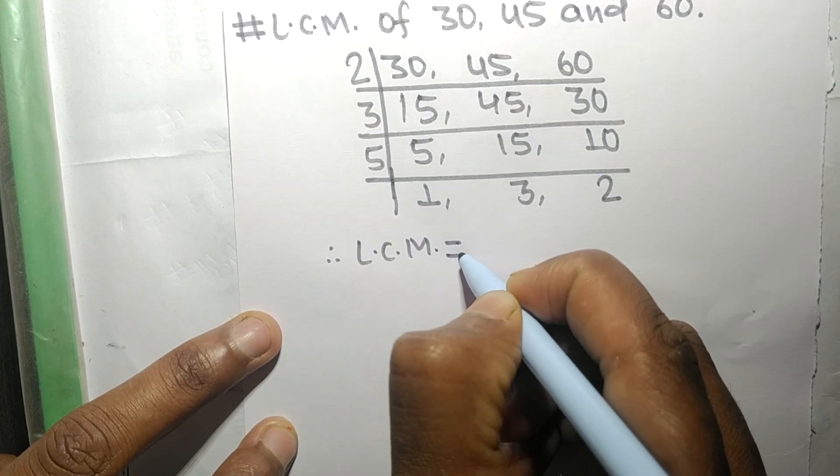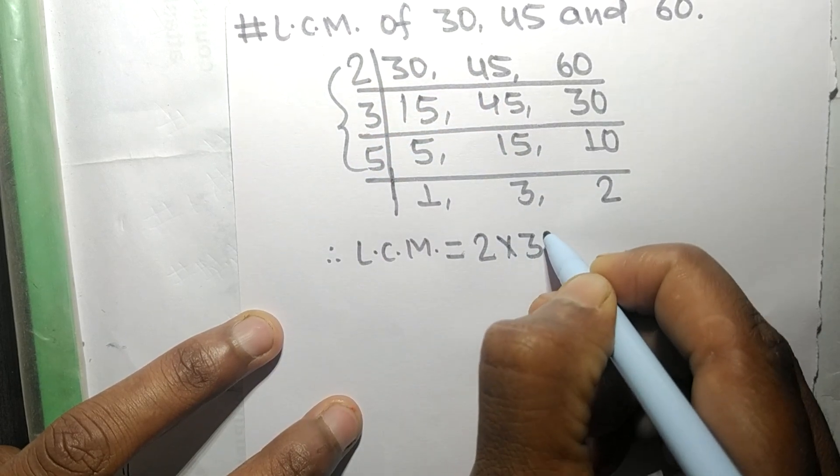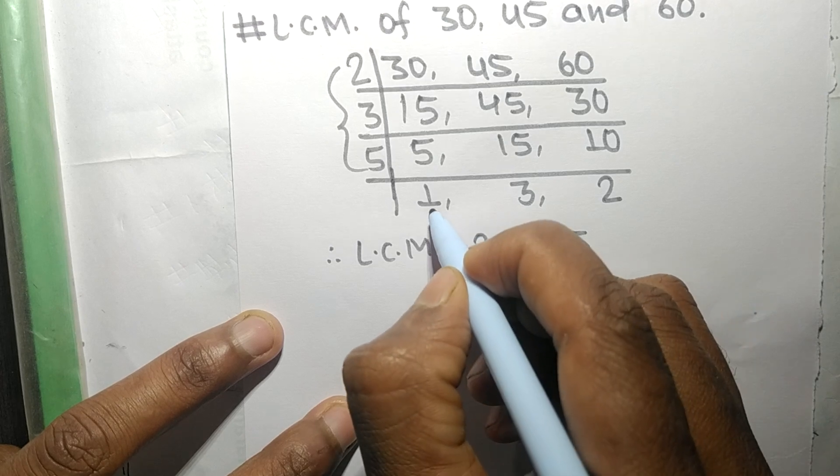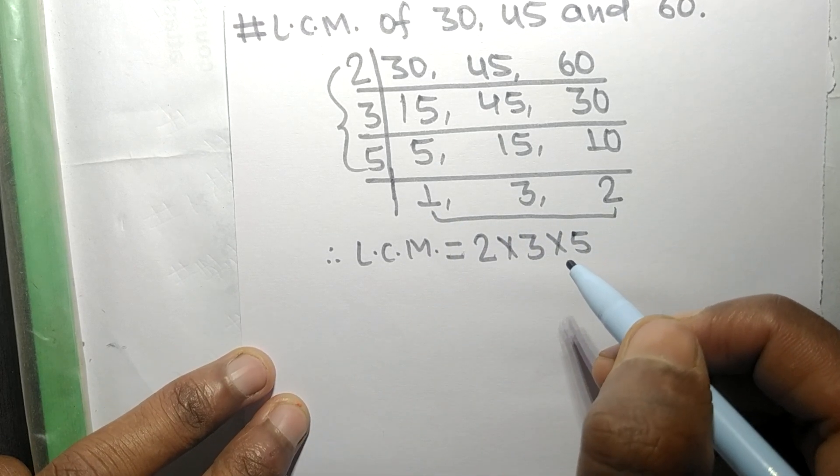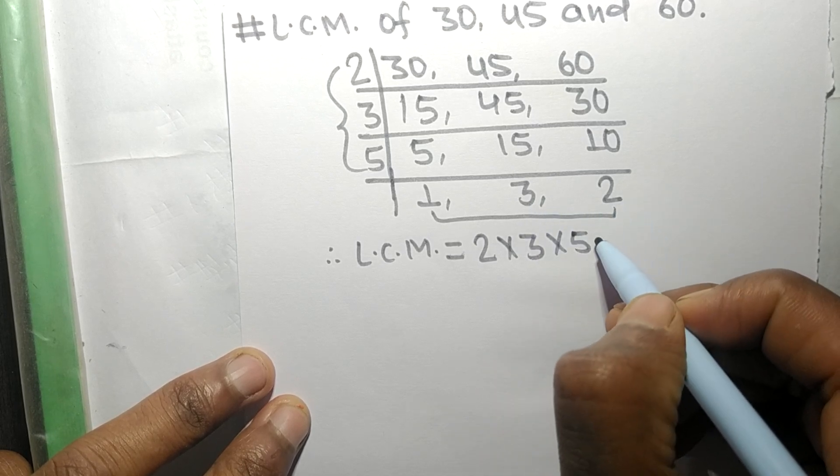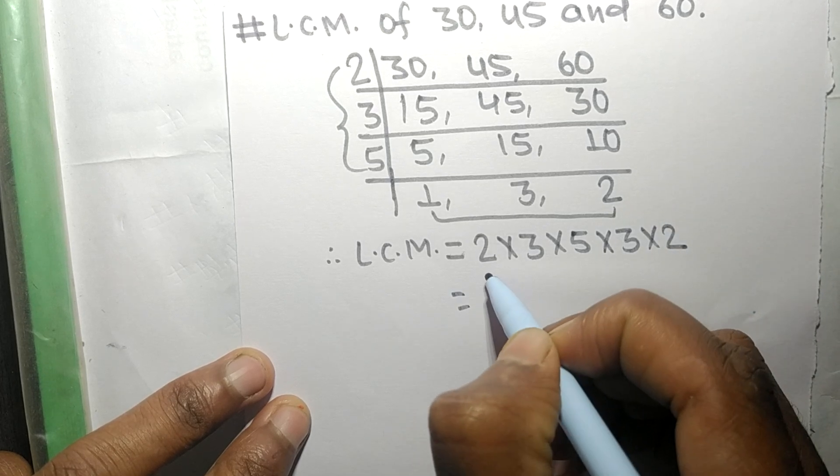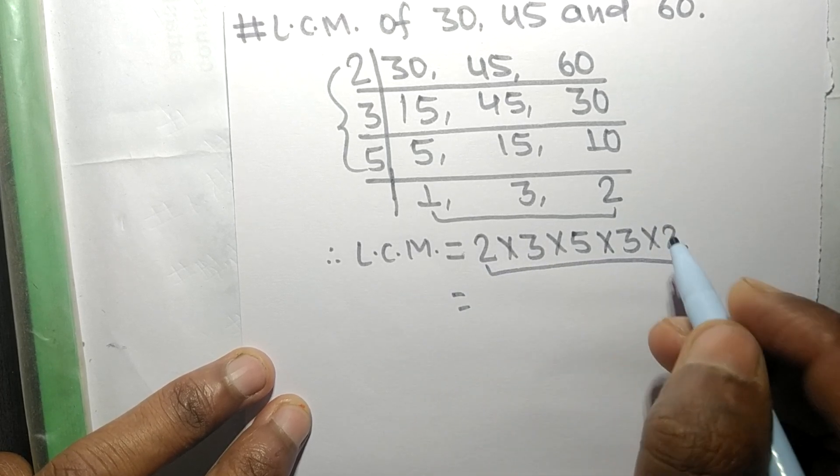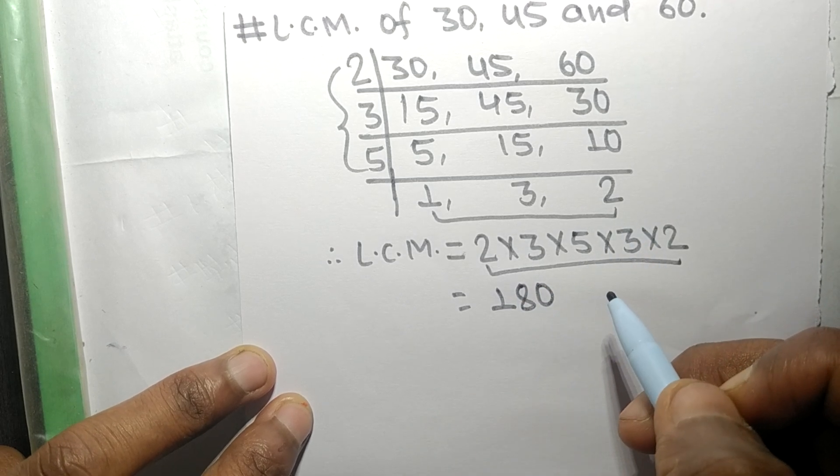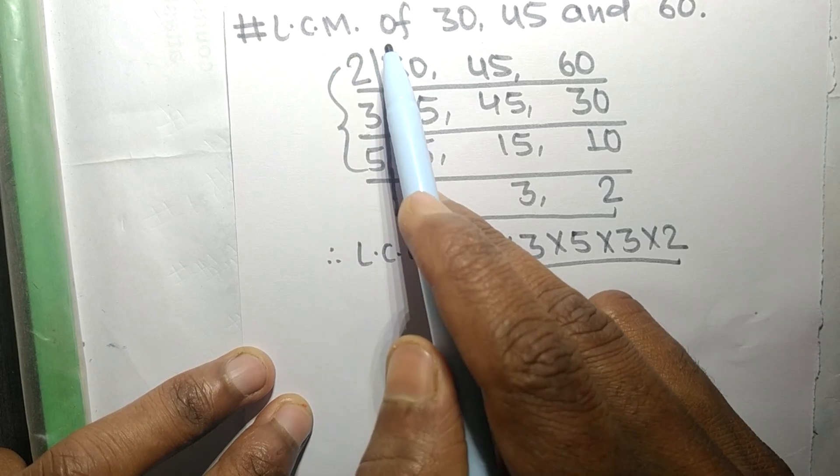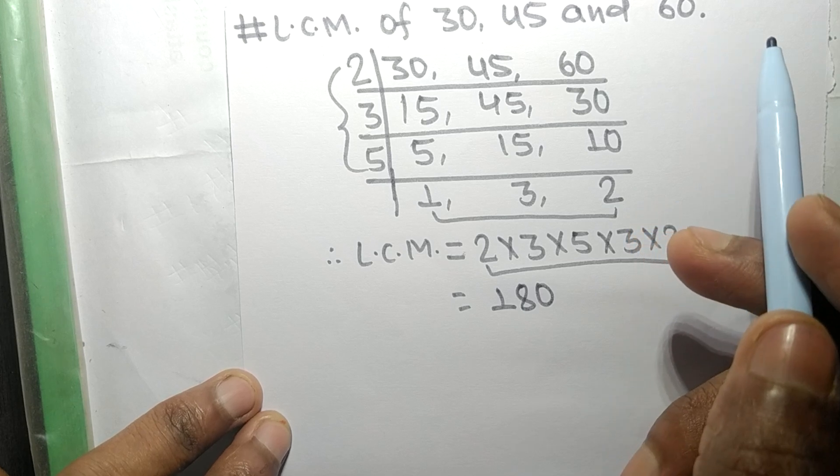Therefore its LCM is equal to, from this side it is 2 times 3 times 5, and from this side we choose the numbers greater than 1, that is 3 and 2. So multiplied by 3 and 2. So by multiplying all these numbers we get 180.